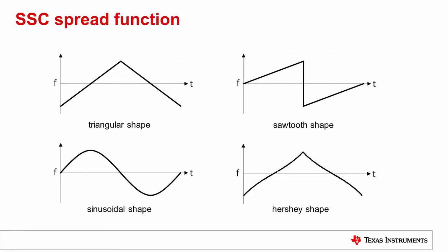To evenly distribute the frequency components of the SSC clock, a special function is used to sweep through the spread frequency range. Other spread functions besides triangular exist as well. For example, the Hershey-Kiss profile offers better performance compared to the other functions shown.